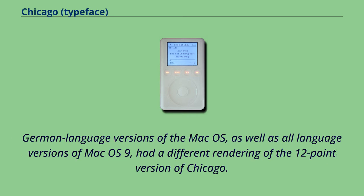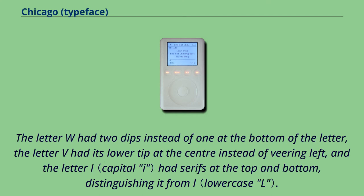German-language versions of the Mac OS, as well as all language versions of Mac OS 9, had a different rendering of the 12-point version of Chicago. The letter W had two dips instead of one at the bottom, the letter V had its lower tip at the center instead of veering left, and the letter I had serifs at the top and bottom, distinguishing it from L.